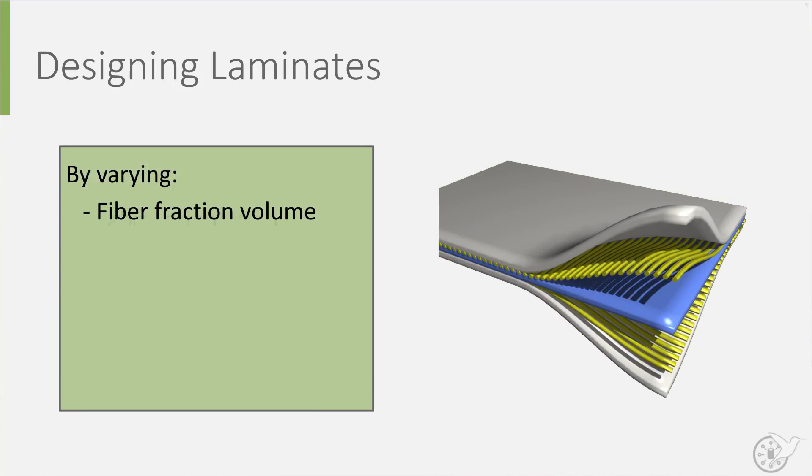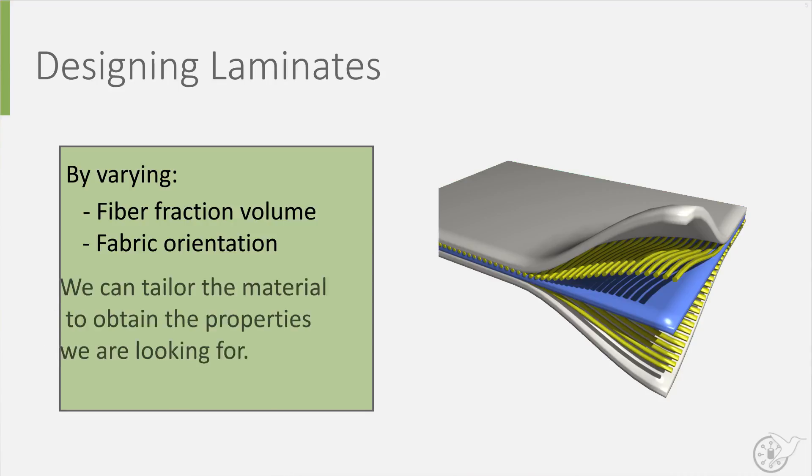Tinkering with the fiber volume fraction and stacking plies under different orientation on top of each other, as is shown here, allows us to tailor material to the properties we are looking for. This combination of ply layers is called a laminate, and is also referred to as a composite material.